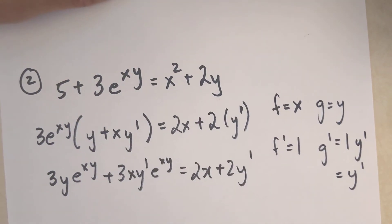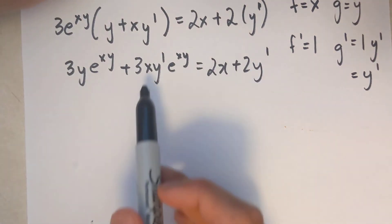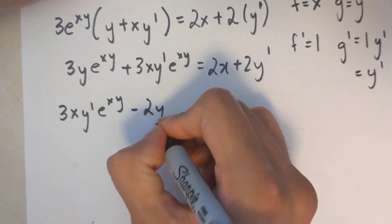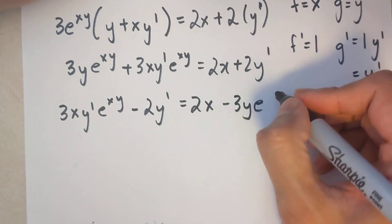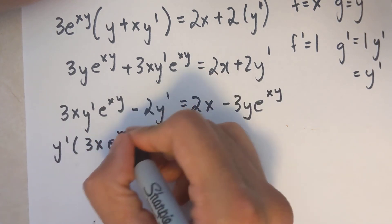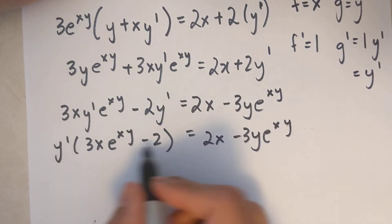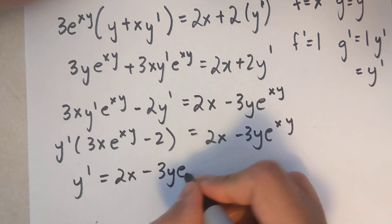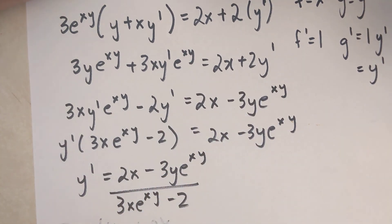I move all y prime terms to one side and everything else to the other: 3xy prime e^(xy) minus 2y prime equals 2x minus 3ye^(xy). Factoring out y prime gives y prime times (3xe^(xy) minus 2), and dividing yields y prime equals (2x minus 3ye^(xy)) divided by (3xe^(xy) minus 2). That's my final solution.